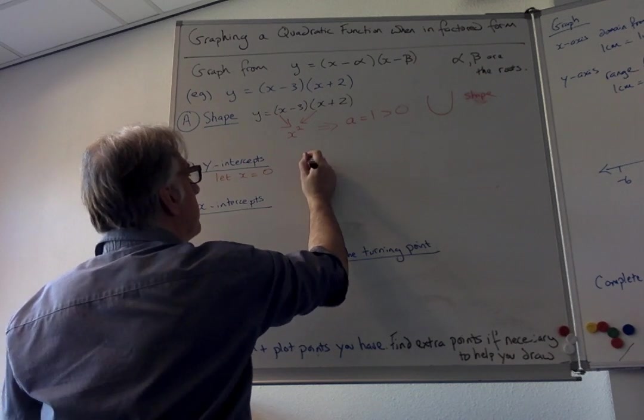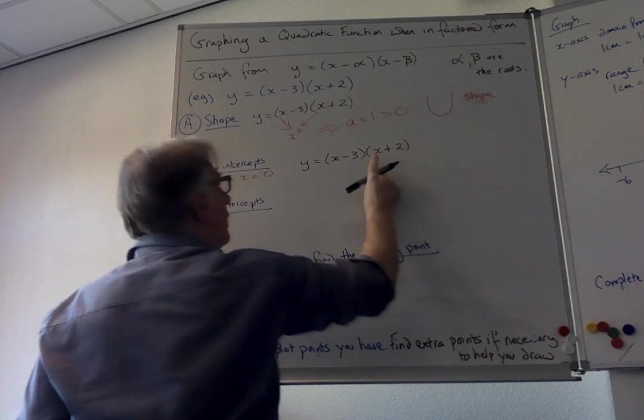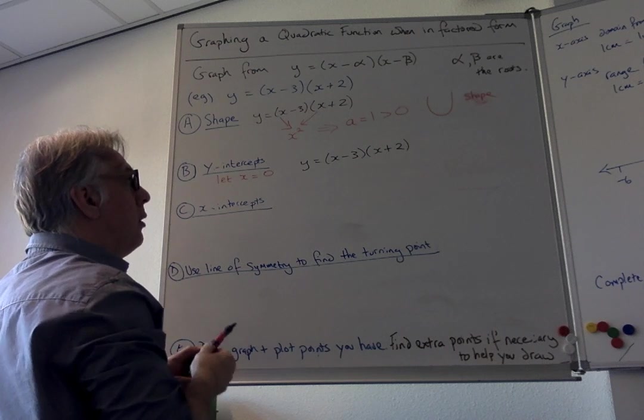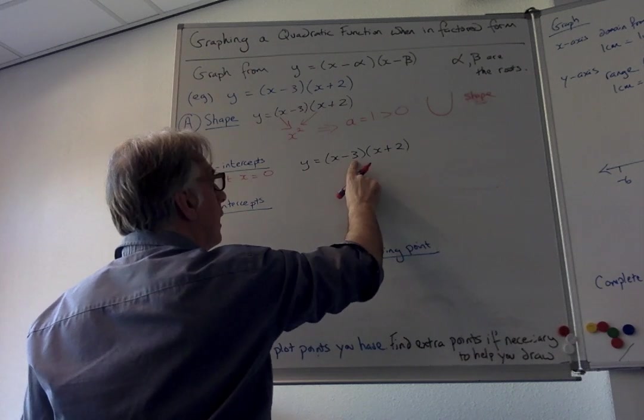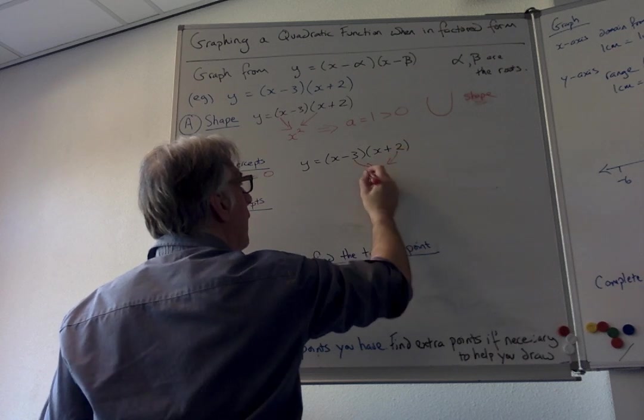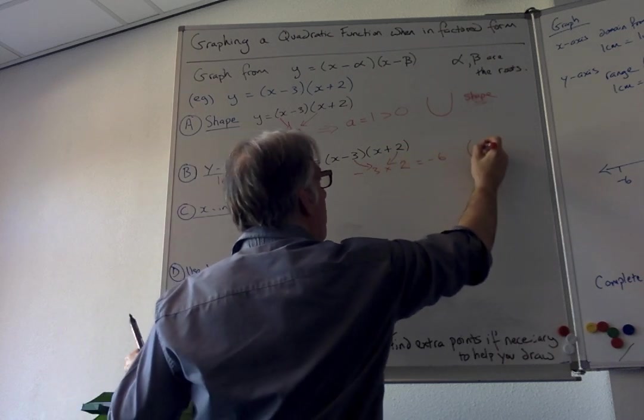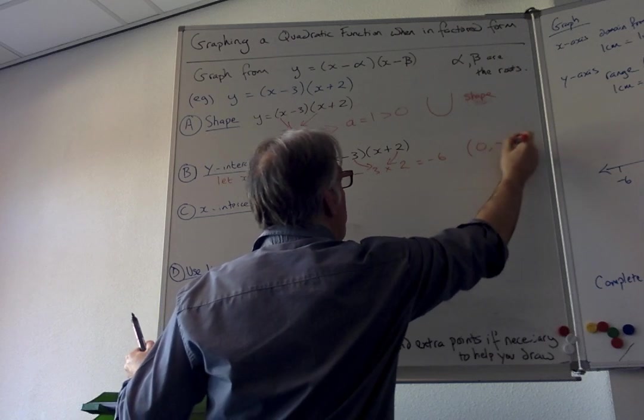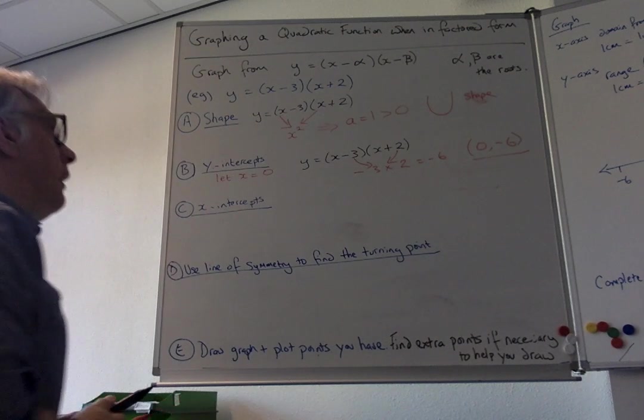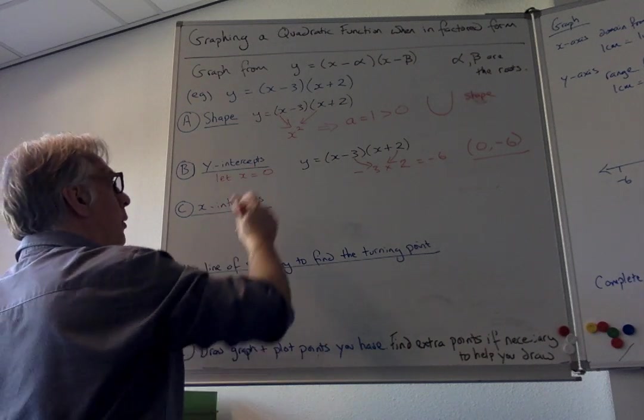When you look at this you can see these two are 0, and the only part you have to look at is the second term here. If I take these two together it's minus 3 times 2, which is minus 6. So the y-intercept is 0, minus 6. That's quite quick and easy.